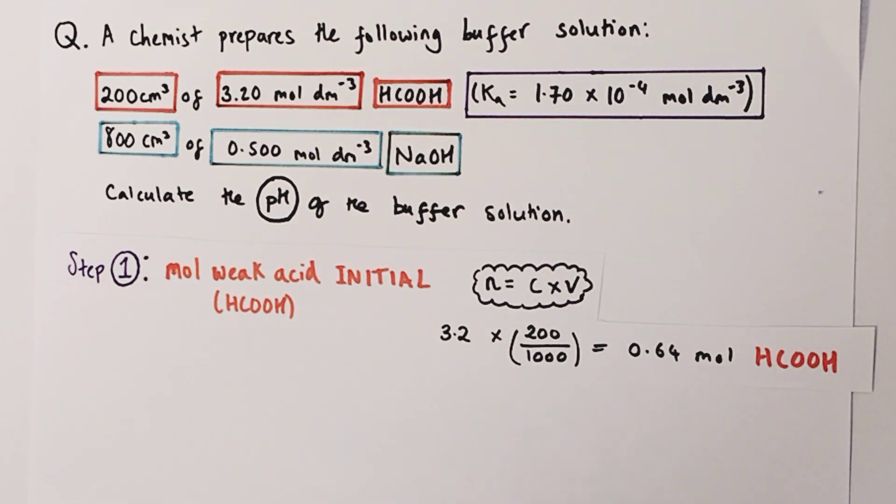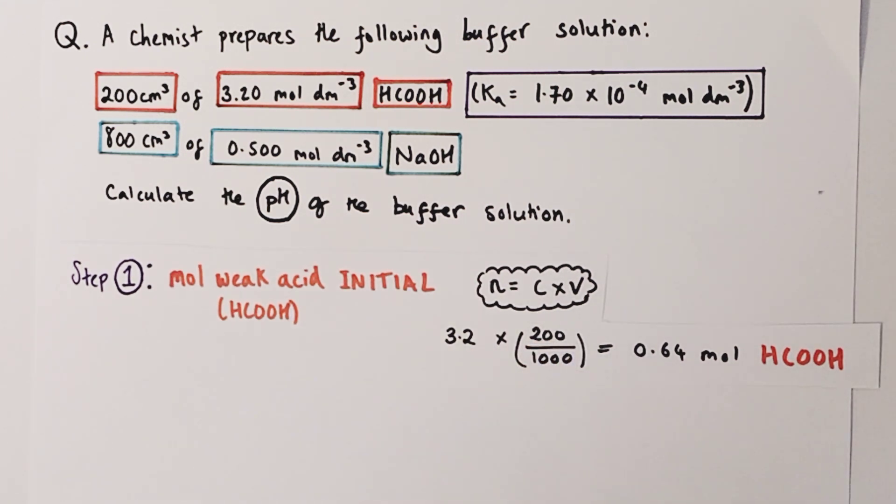The first step in our calculation is to calculate the moles of weak acid being added initially. Don't forget that weak acid will react with the strong alkali when it's added, so this is only the starting amount of weak acid, in this case methanoic acid, present. Moles equals concentration times volume, that's 3.2 mol per litre times 200 over 1000, converting our volume from cm³ into dm³. We have 0.64 moles of methanoic acid present at the start of creating this buffer solution.